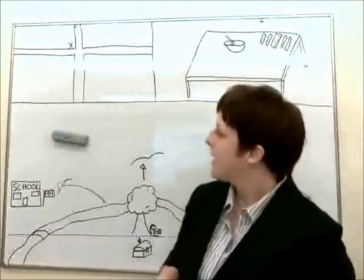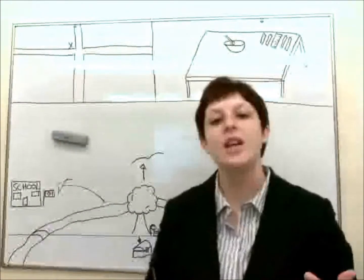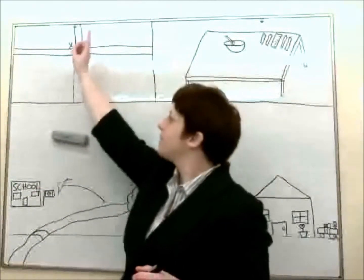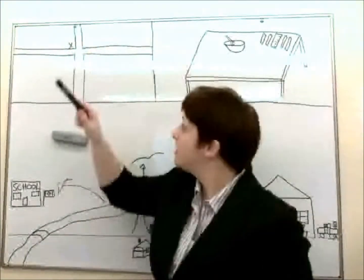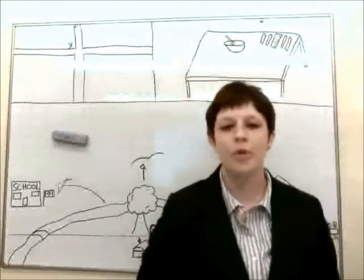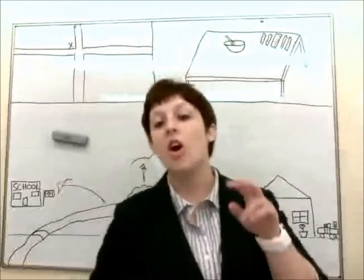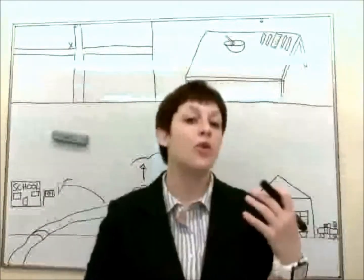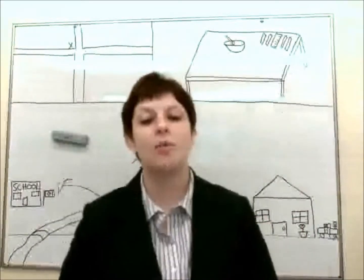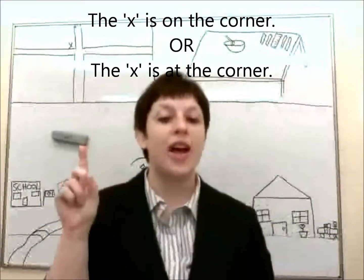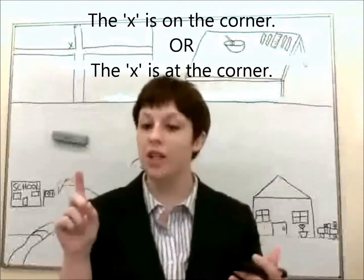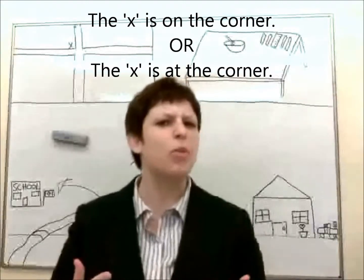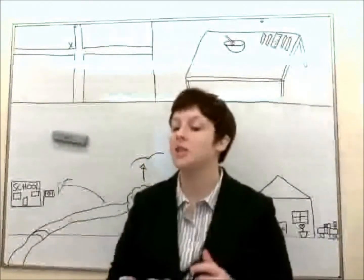Now, if we move up, we can see that we're at an intersection — at a crossroads, you might say. There is an X here, and this is a corner. So where is the X? There are two common ways to say this. Depending on whether you're using British English or North American English, you could either say the X is on the corner, which is more North American, or the X is at the corner, which is more British. Either one is completely correct.